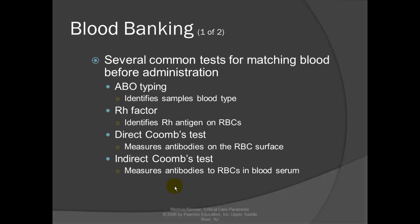Blood banking involves several common tests for matching blood before administration. You have to be sure that it's matched — it will cause a hemolytic reaction if not. ABO typing identifies the blood sample type. RH factor identifies the RH antigen on the RBCs, giving a negative or positive result. A direct Coombs test measures antibodies on the RBC surface, and an indirect Coombs test measures antibodies to the RBCs in the blood serum.